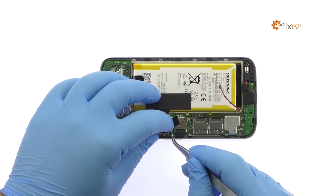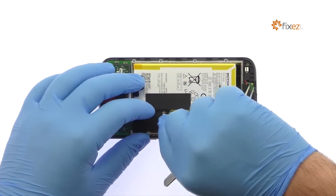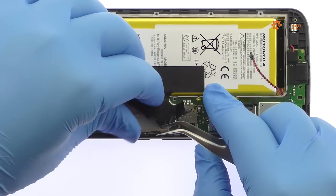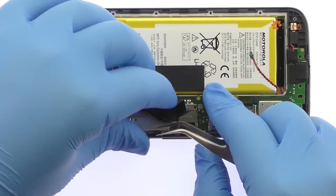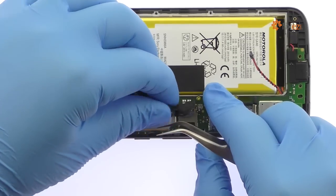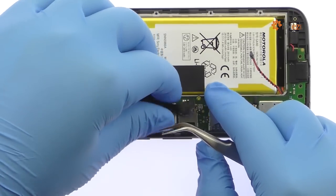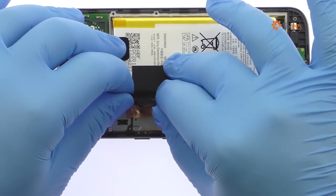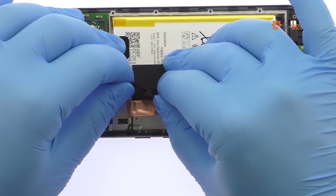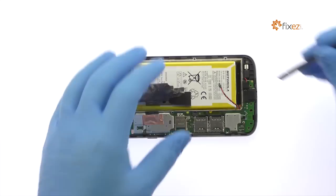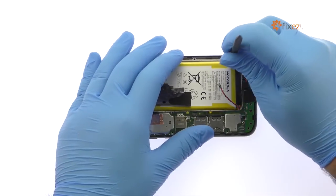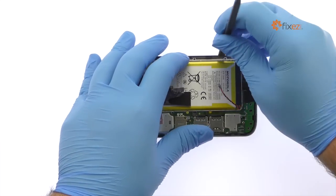Peel up the adhesive tape. Pry up and remove the Motorola Moto G4 Lithium-Ion 3000mAh battery.